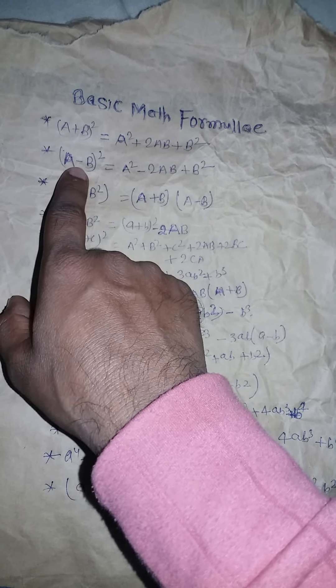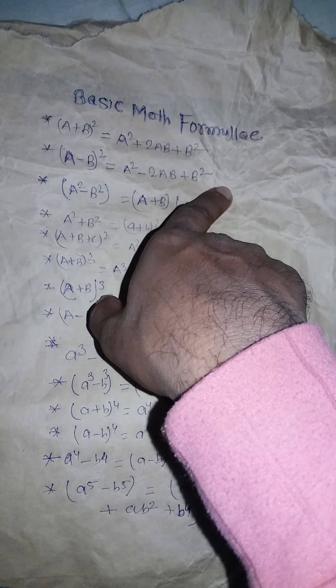Second one: a minus b whole square is equal to a square minus 2ab plus b square.